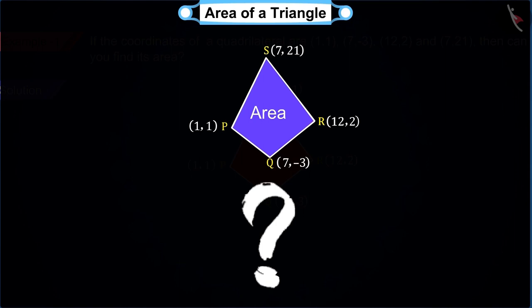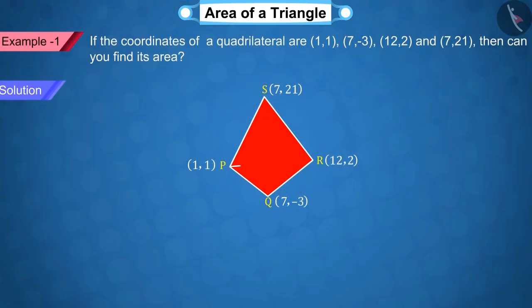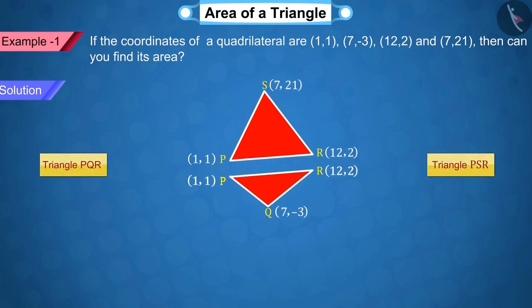Correct! If we join the point P to the point R, then the quadrilateral gets divided into two triangles, PQR and PSR. With the help of which, we can find the area of the quadrilateral.